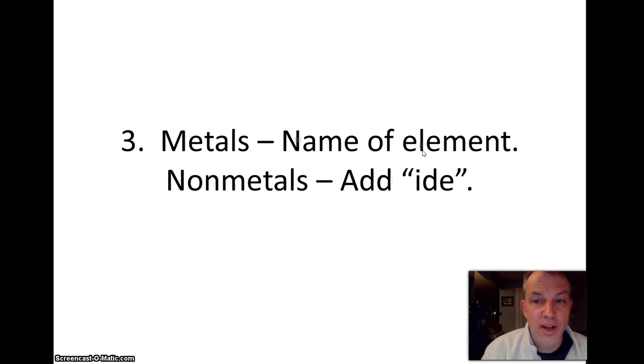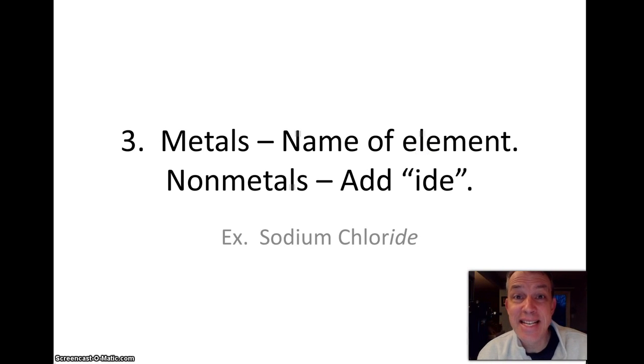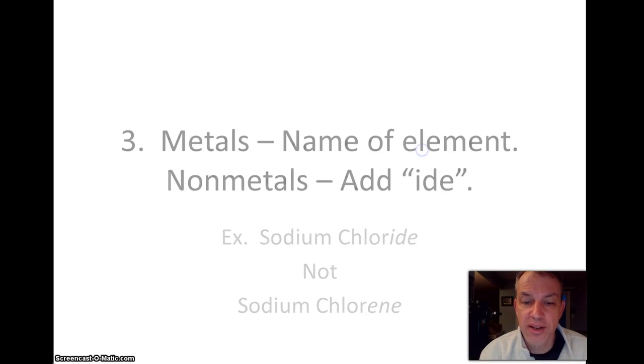The third point is that metals, to name a metal, you just put down the name you see on the periodic table. For the non-metal, you just put down the name of the element, but change the ending to I-D-E. So for instance, we call it sodium chloride, not sodium chlorine. And you'll see that we'll be able to do some practice and examples with those.